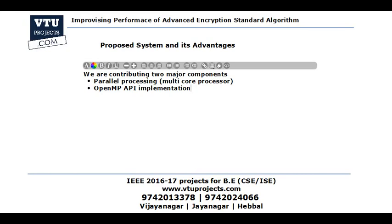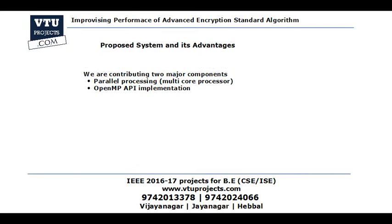The combination of these two things will reduce the overall time taken for performing encryption and decryption for large data files. We are going to contribute to two major components: parallel processing using multi-core processors, which is the hardware perspective, and OpenMP API implementation provided by the Java library, which is the software perspective. We are improving the existing encryption algorithms in both hardware and software.